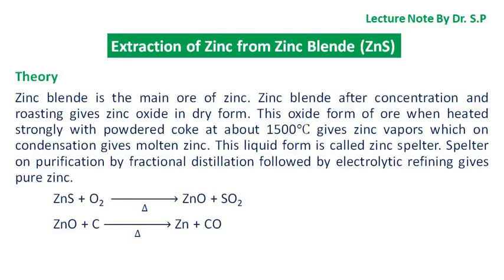Zinc blende is the main ore of zinc. After concentration and roasting, it gives zinc oxide in dry form. This oxide form of ore, when heated strongly with powdered coke at about 1500 degrees Celsius, gives zinc vapors which on condensation give molten zinc. This liquid form is called zinc spelter. Spelter on purification by fractional distillation followed by electrolytic refining gives pure zinc.